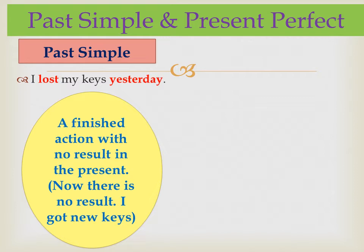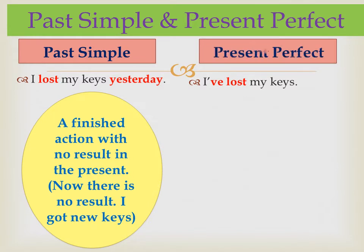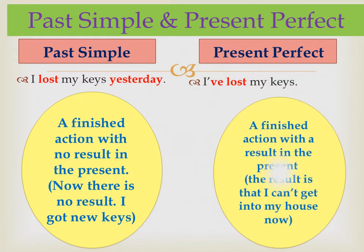What about the present perfect? 'I've lost my keys.' Here you're talking about an action that started in the past but affected the present time. The action of losing the keys is over, but the effect or result is that I can't get into my house.